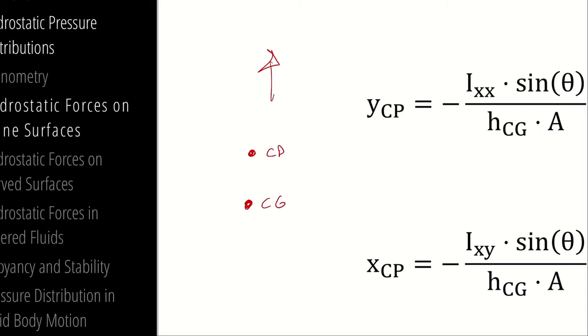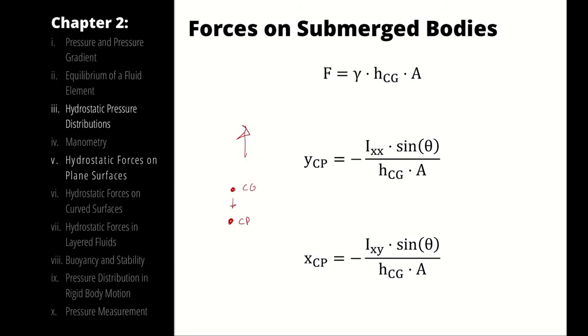What is much more likely to happen, though, is that we will have a negative center of pressure. Therefore, our applied pressure will be below our center of gravity. That's why we have this negative term out front. The positive or negative value of these two terms is important. I think it'll make more sense if we try an example.